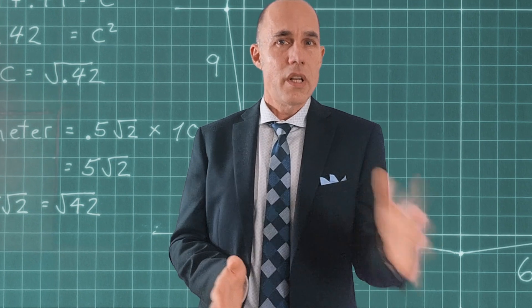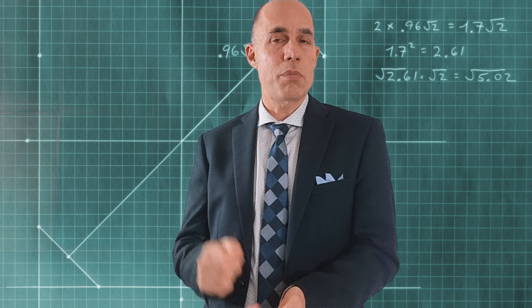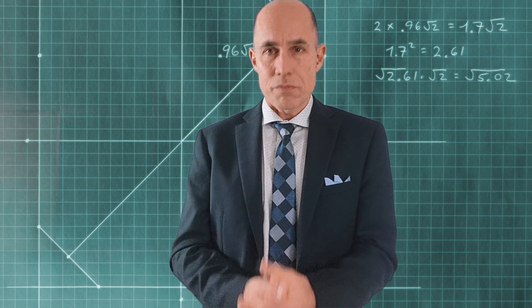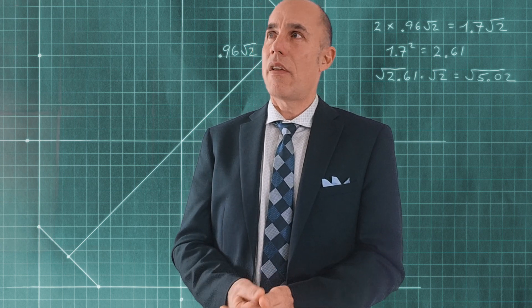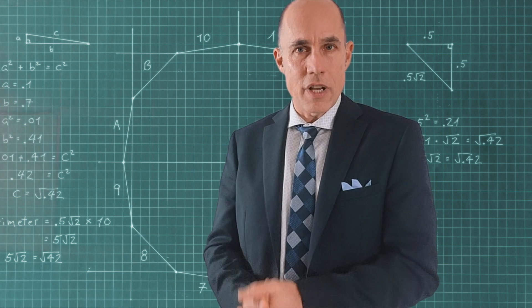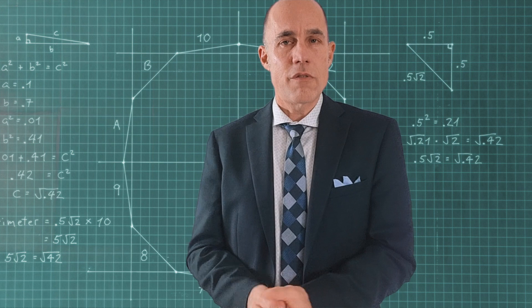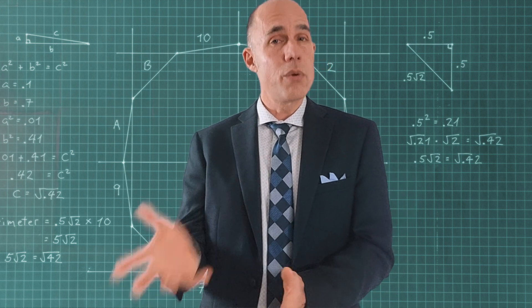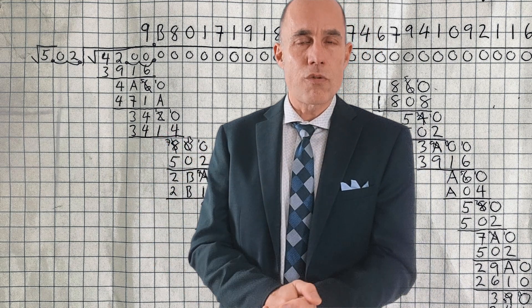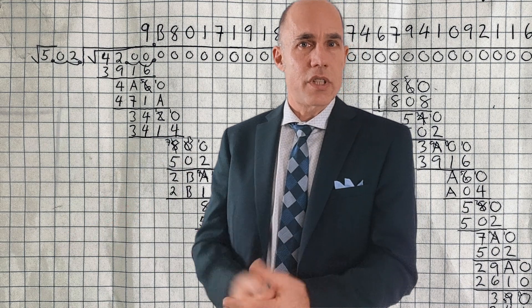1.7 squared is 2.61; multiply that by the square root of 2 and we get 5.02. Then 5 squared is 21, so 21 times square root of 2 is 42. So we're doing square root of 5.02 divided into square root of 42. Swinging our decimal places over, that becomes 502 into 4200, and the answer itself is going to be a square root.